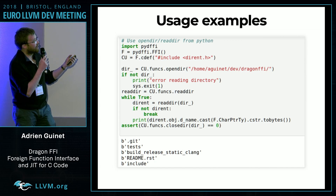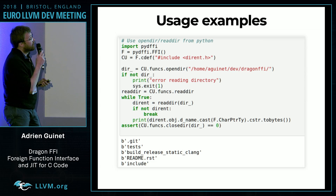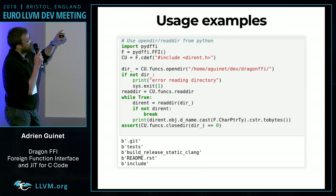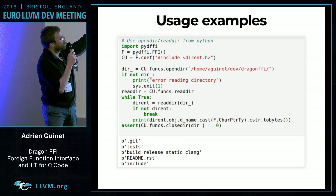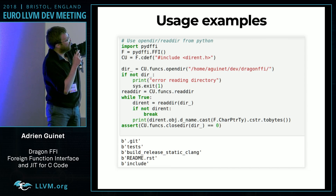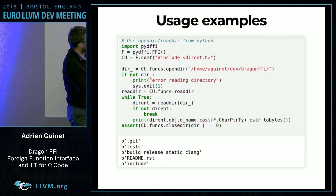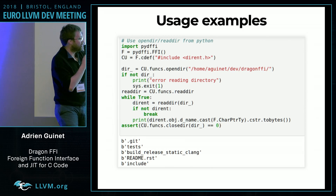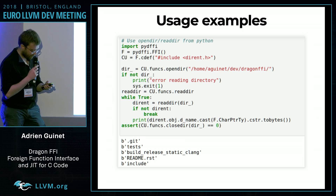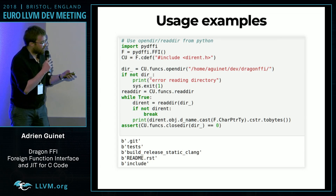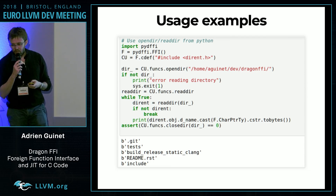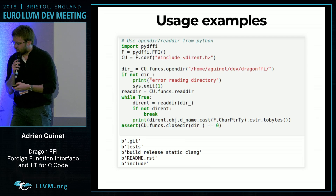Here's a usage example. We are calling open and read from Python, so we include your header. We just use open and read, and we can see that we fill a structure, print it, and it just works. There are a lot of examples in the GitHub repository if you want to see — there are many use cases at this time.